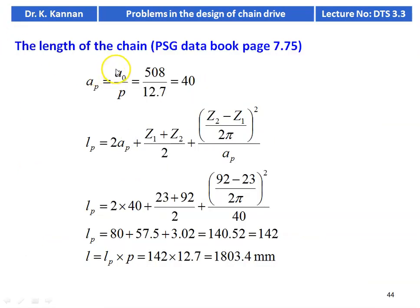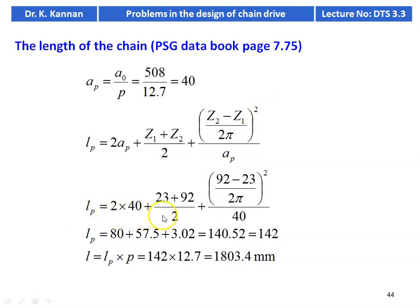Length of the chain: AP = A0/P = 508/12.7 = 40. LP = 2AP + (Z1+Z2)/2 + (Z2−Z1)²/(2π)² / AP = 2×40 + (23+92)/2 + (92−23)²/(2π)² / 40 = 140.52, rounded to next even number 142. Length of chain = LP × P = 142 × 12.7 = 1803.4 mm.